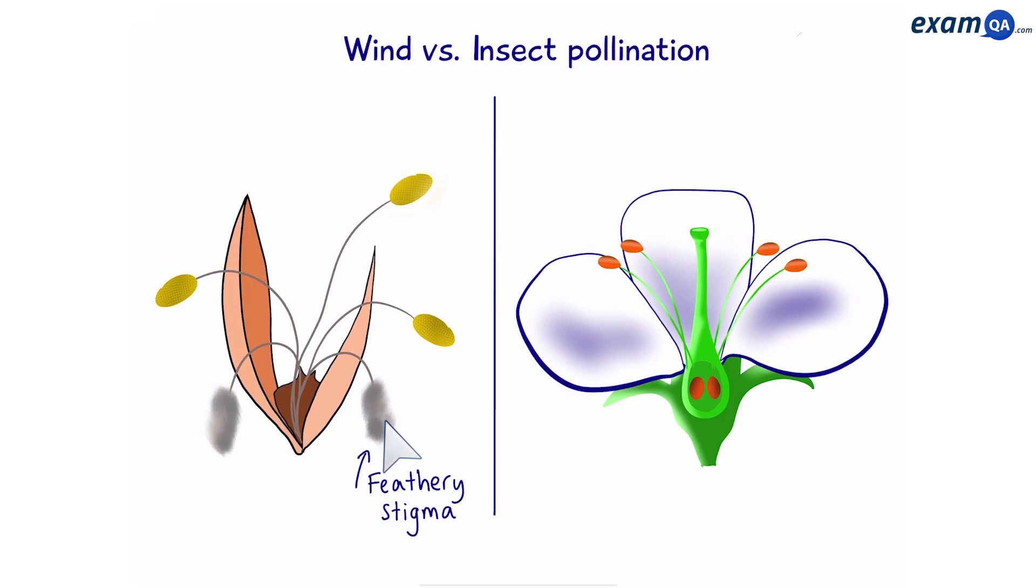The next difference is that the wind pollinated flower has feathery stigma. This is important because it acts like a net to allow it to catch pollen flying around. On the other hand, the insect flower has a sticky stigma. This is so that it can catch the pollen from insects like bumblebees.